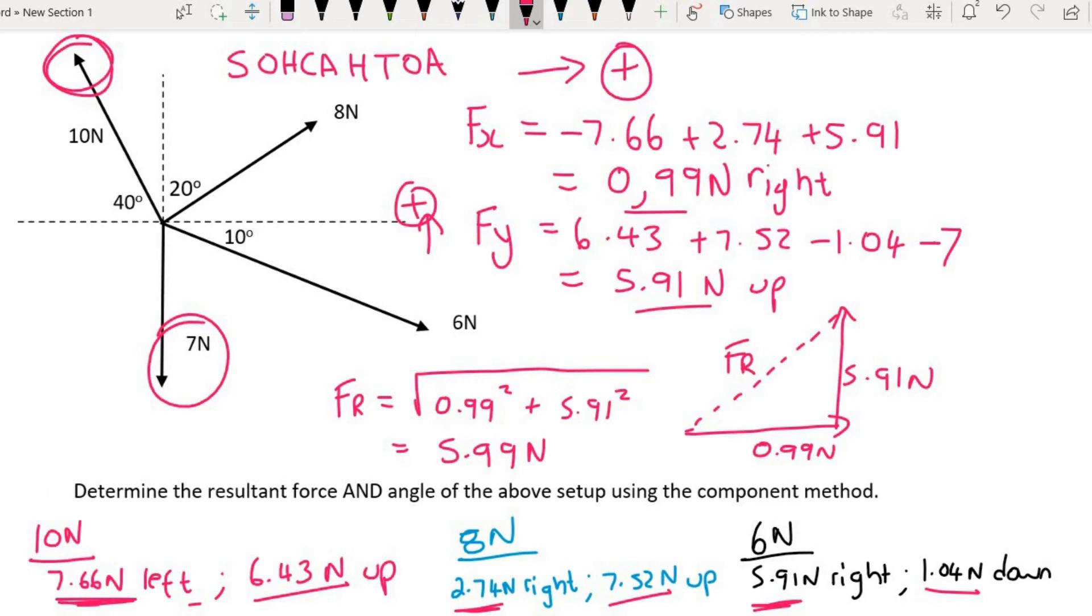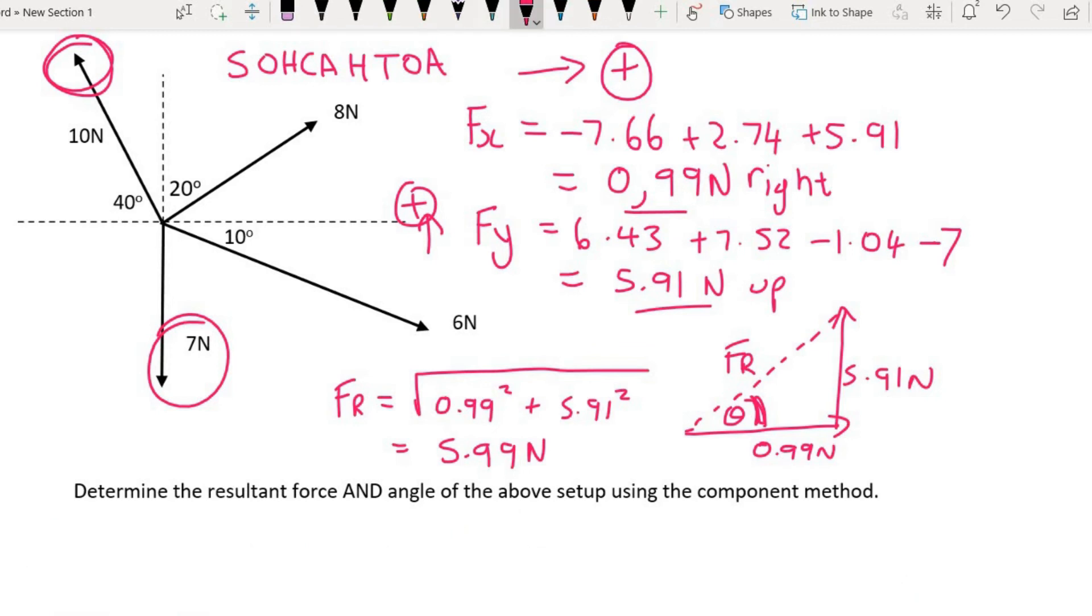Now we need to work out the angle. I'm going to call that theta. You can see that we have the opposite and we have the adjacent, so that's tan. I can say tan of theta is equal to the opposite over the adjacent. Because we're looking for the angle, you must say shift tan on your calculator. So shift tan 5.91 over 0.99, and that's going to give us 80.49 degrees. But look at how we measured that. It's going upwards, so it's north of this line which is the east line. So we'll say north of east.